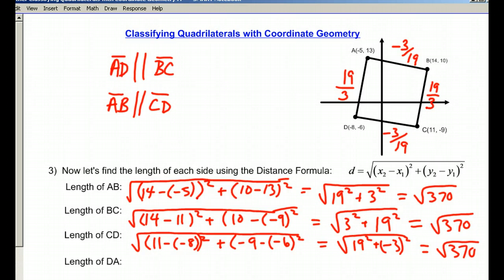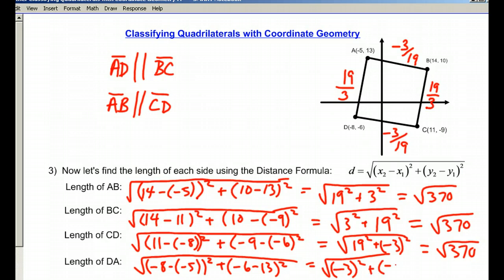You can see a trend happening now. The length of DA is going to be (negative 8 minus negative 5) squared plus (negative 6 minus 13) squared, which is negative 3 squared plus negative 19 squared, and that's equal to the square root of 370.